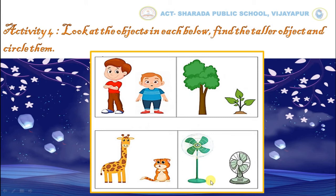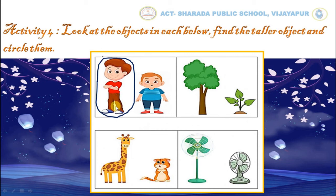So kids, observe all these pictures carefully. In this first box, we can see two boys. Now tell me, who is taller and who is shorter here? Yes kids, you are right. Very good children. He is the taller one. In the same way, you have to find out the taller objects in each box and circle them.